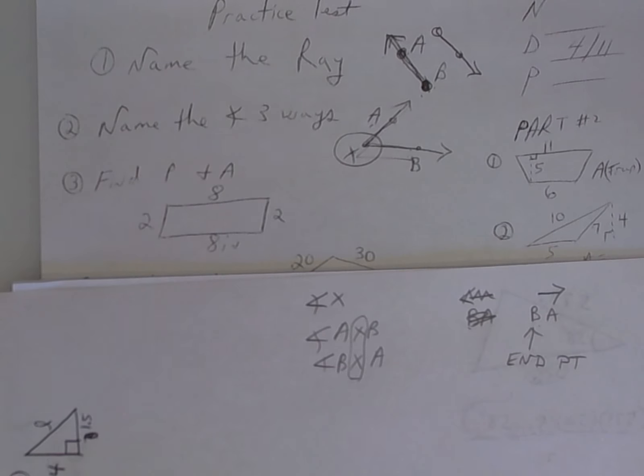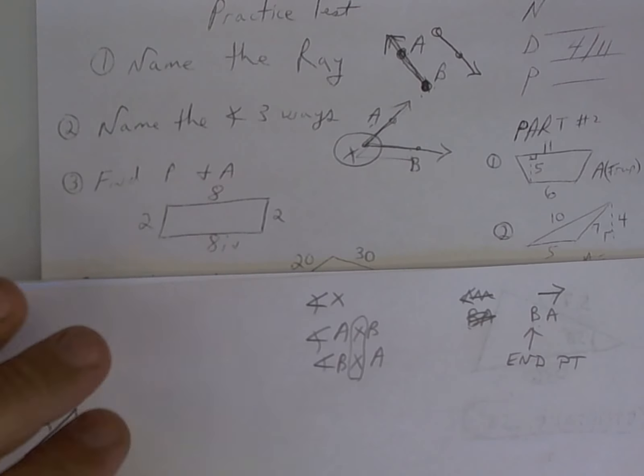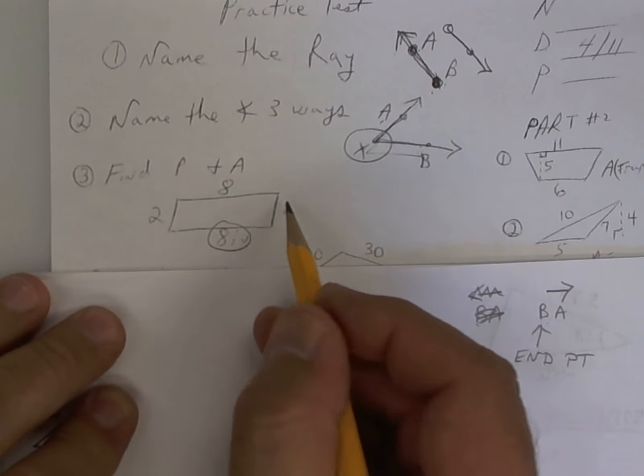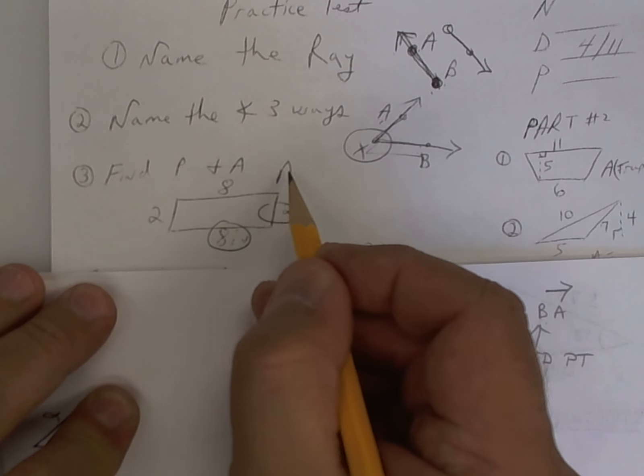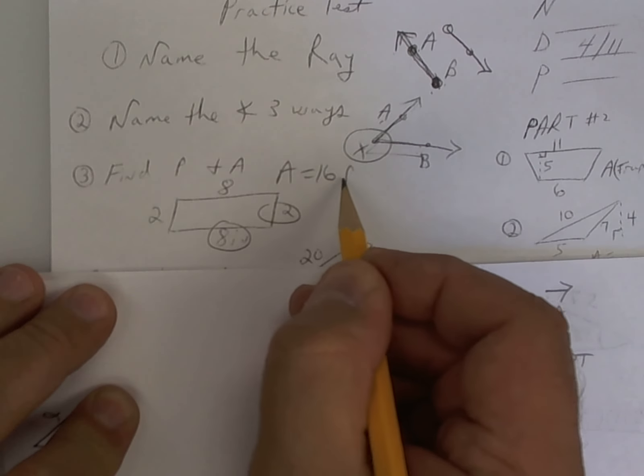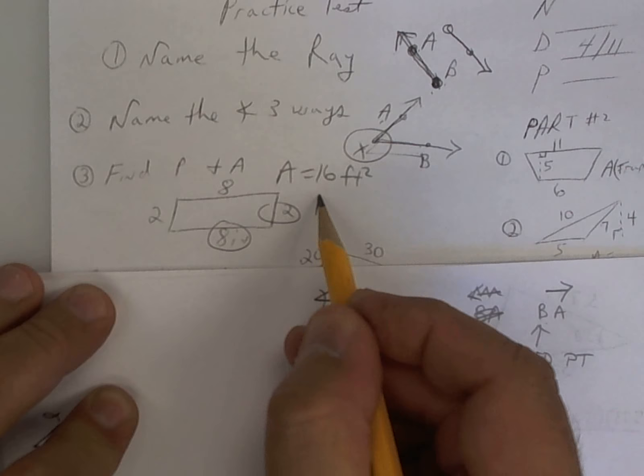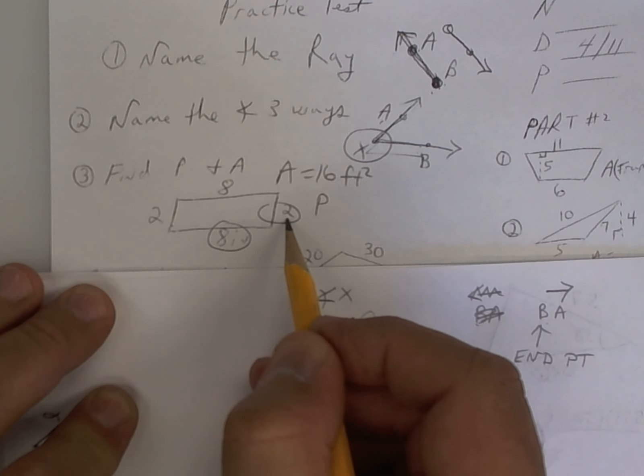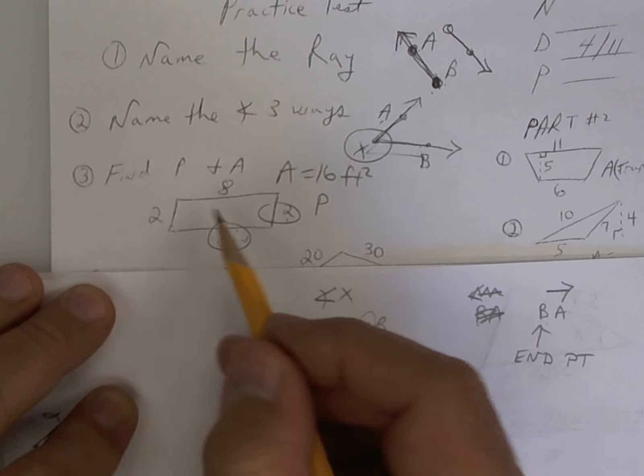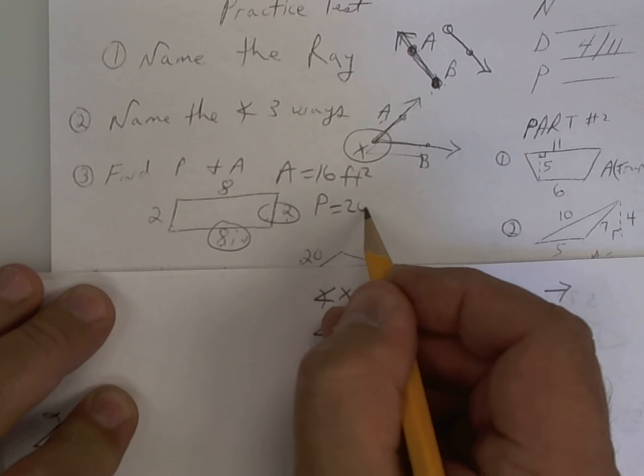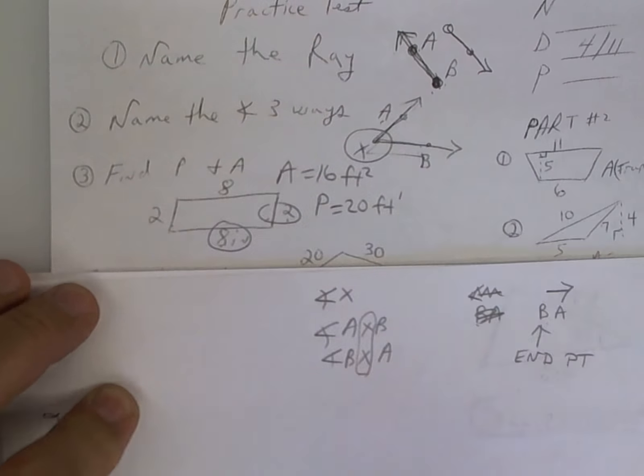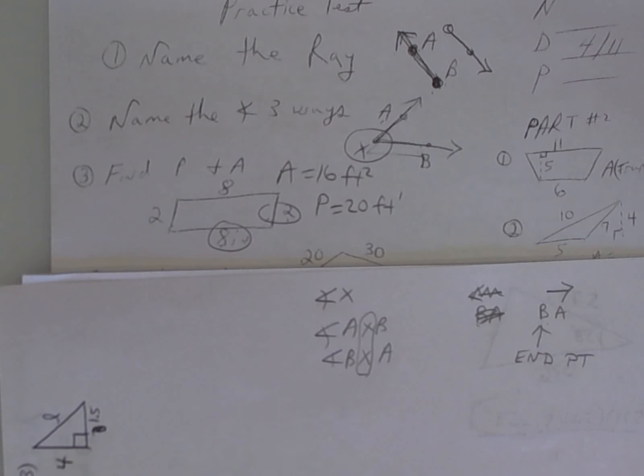Find perimeter and area. Well, area is just going to be eight times two. Length times width. So eight times two. So put area equals 16 square something. Square units. Perimeter is adding them all up. So it's two plus two is four. Eight and eight is 16. 16 and four is 20. So that's going to be 20 feet. Understand that perimeter is one dimension. Area is two dimension.